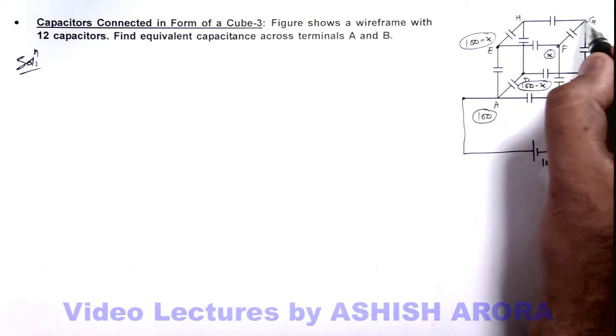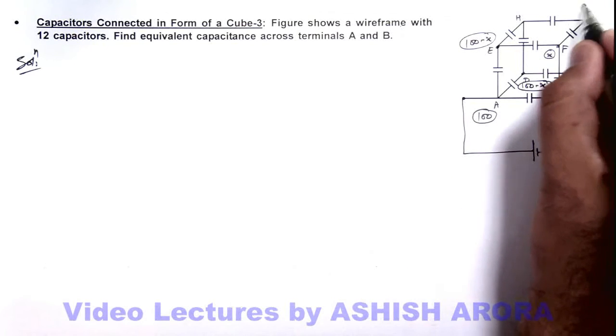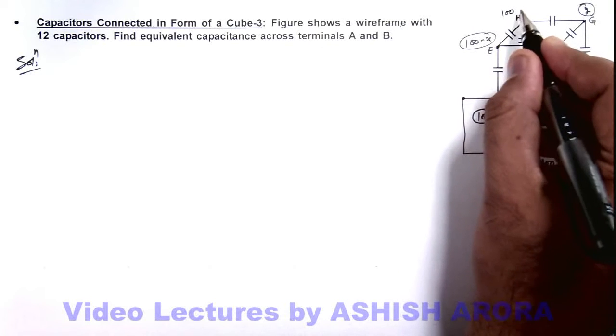Now for this node G we can take potential to be y and at H it will be 100 minus y.